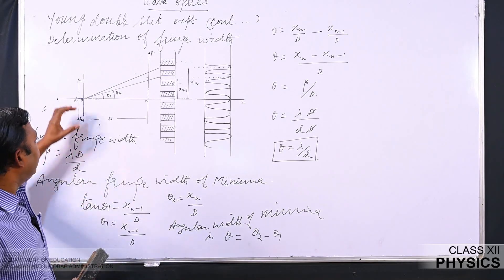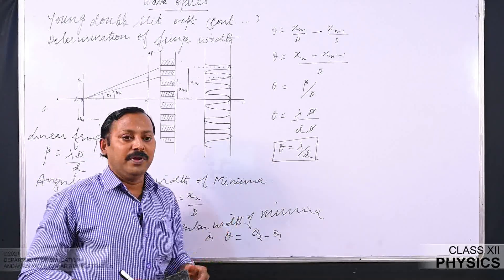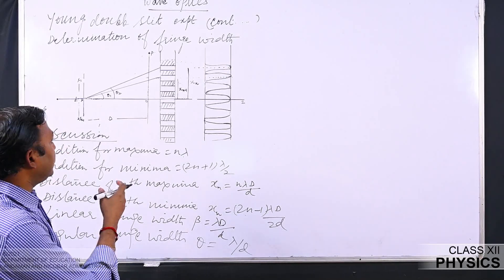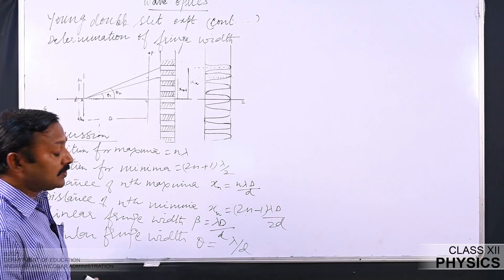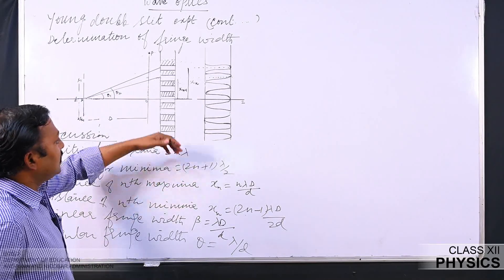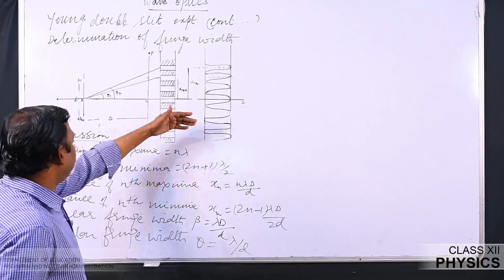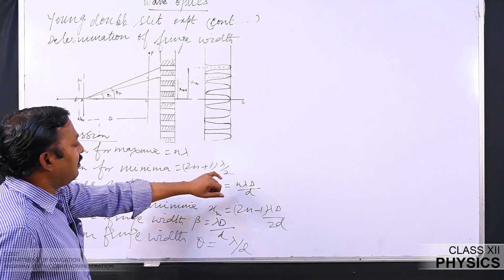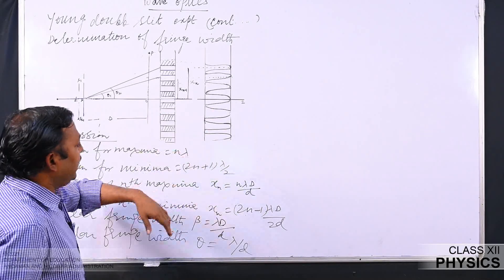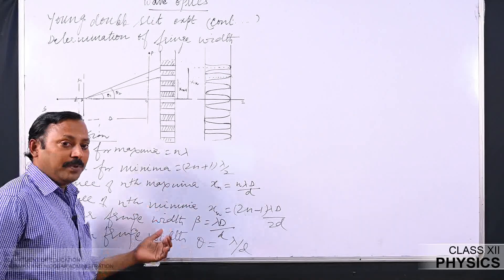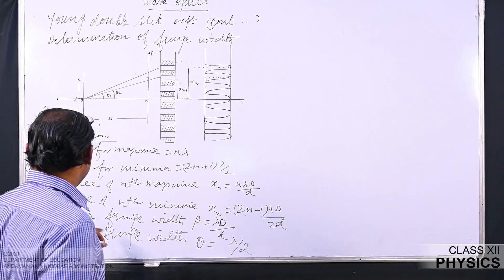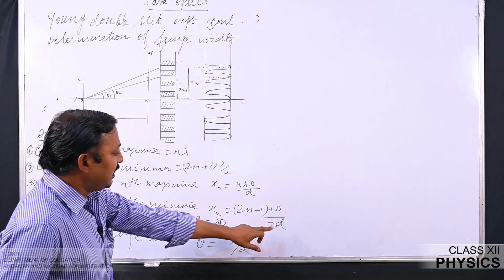We completed the calculation of fringe width and angular width in Young's double slit experiment. Now we will see the conclusions. The condition for maxima is path difference = n·lambda, giving maxima for lambda, 2lambda, 3lambda, etc. The condition for minima is (2n+1)·lambda/2, giving minima at 3lambda/2, 5lambda/2, 7lambda/2, etc. Distance of nth maxima = n·lambda·D/d; distance of nth minima = (2n−1)·lambda·D/(2d). Linear fringe width beta = lambda·D/d; angular fringe width theta = lambda/d.